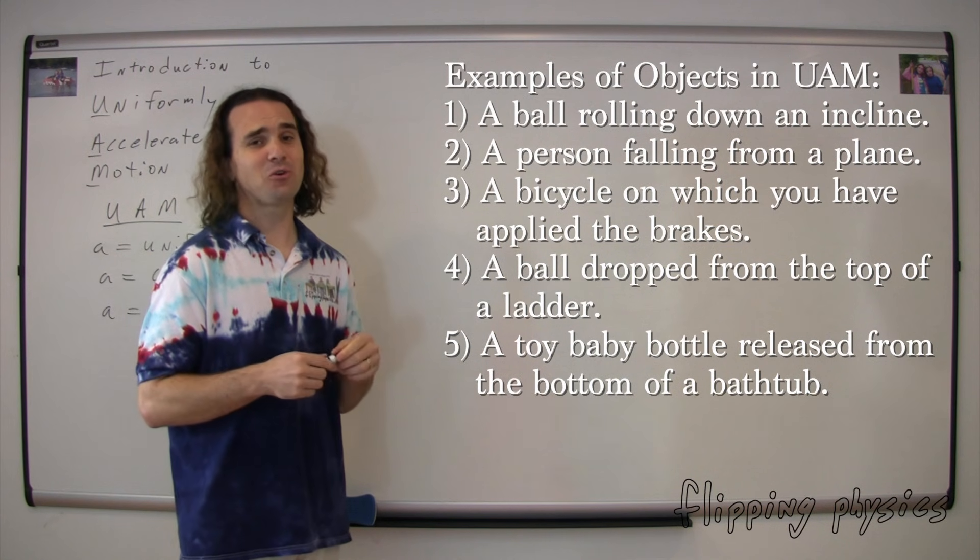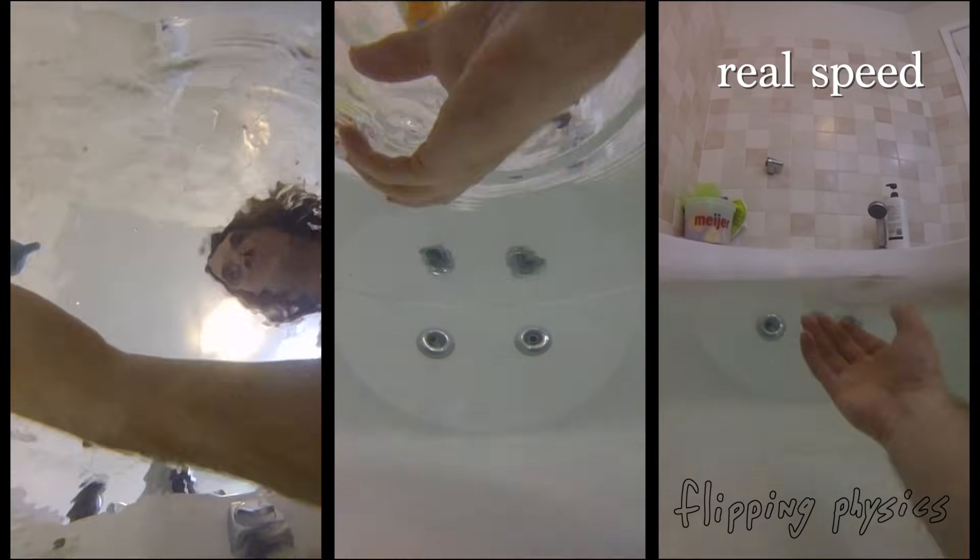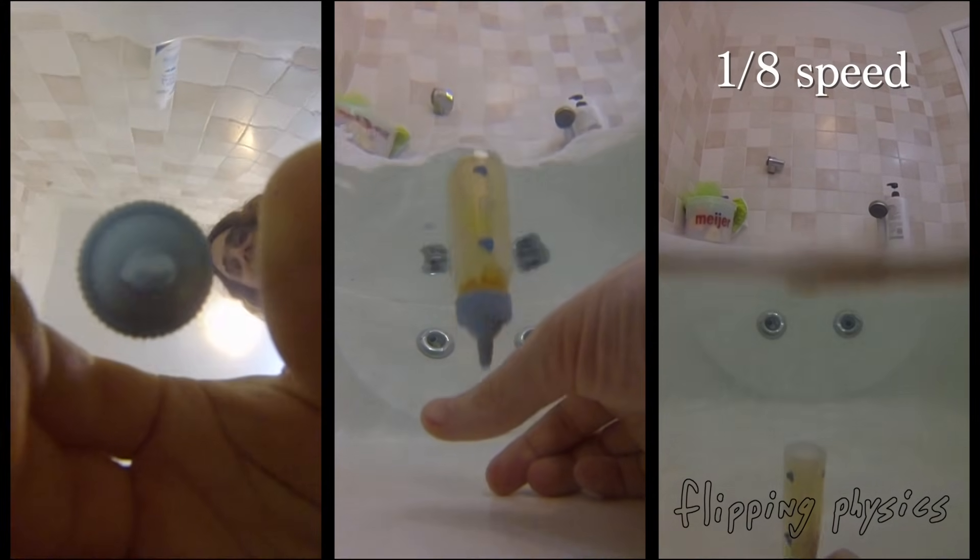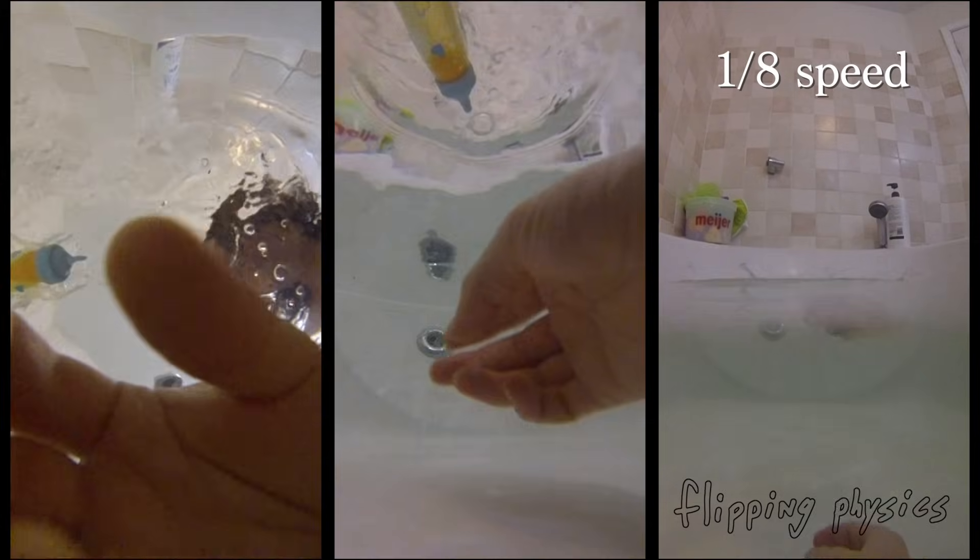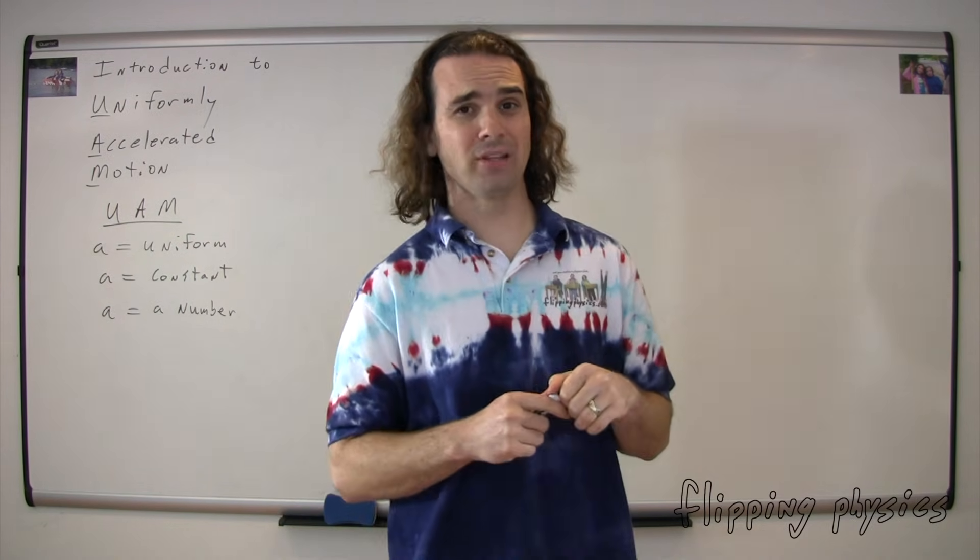Or even a toy baby bottle being released from the bottom of a bath. All of these are examples of objects experiencing uniformly accelerated motion.